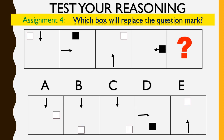The box is moving half length at a time in a clockwise direction, while the arrow is moving one length in an anticlockwise direction.